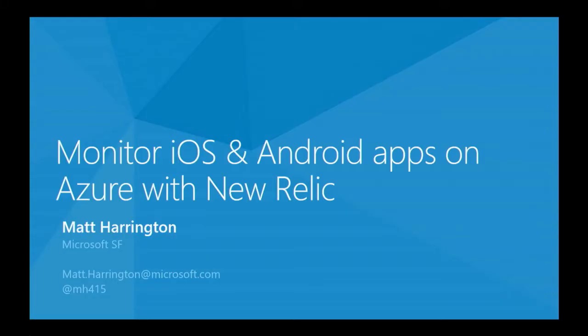I'm with Microsoft in San Francisco. My office is actually just right down the street from here — it's above the Westfield shopping mall. My desk is above the Vans shoe store, so I'm a local guy. I don't work out of Redmond. My email is matt.harrington@microsoft.com, and I am on Twitter at MH415.